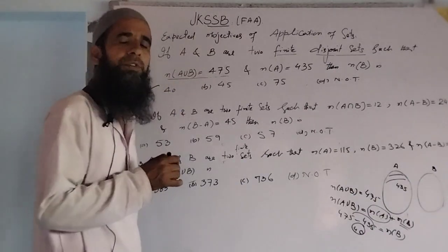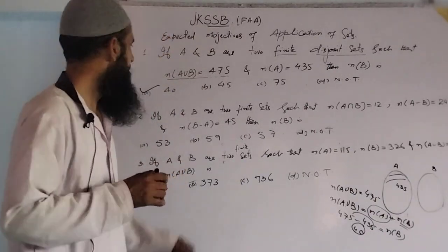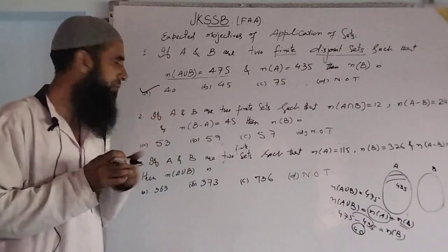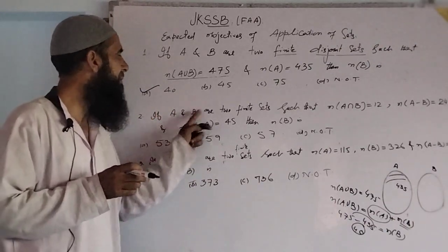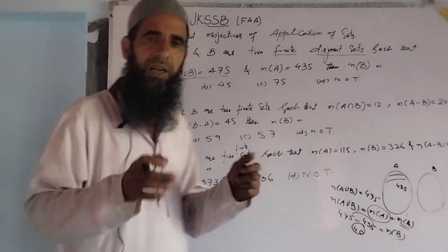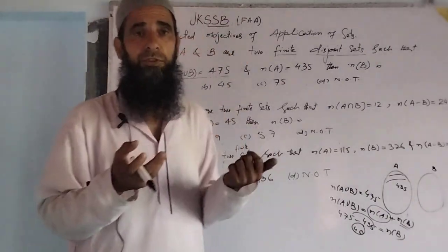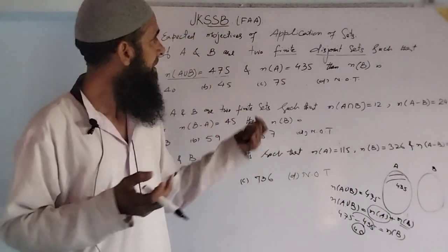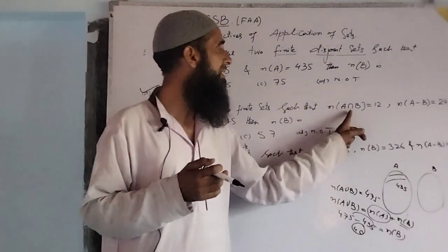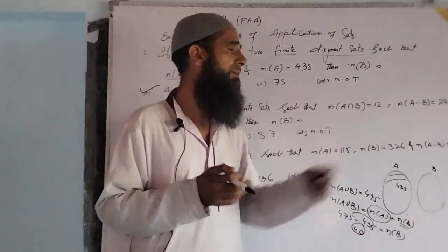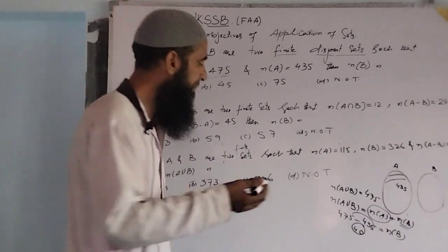The first option, part A, is the correct option for this question. Now, the second objective: if A and B are two finite sets — again we have two finite sets, they can be non-disjoint — the number of elements in A∩B is 12.